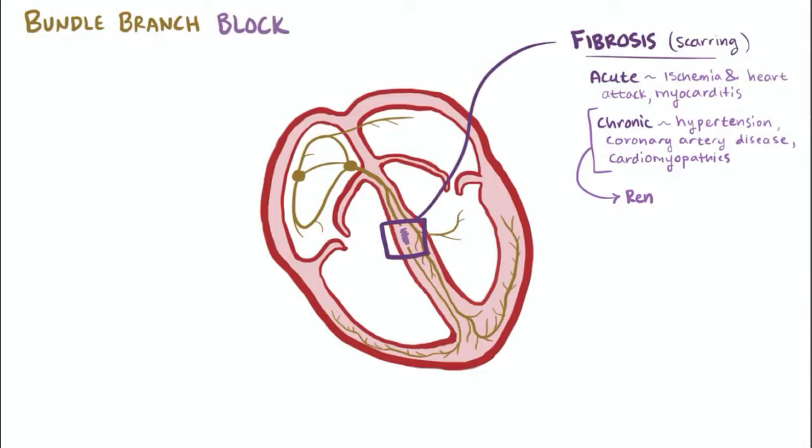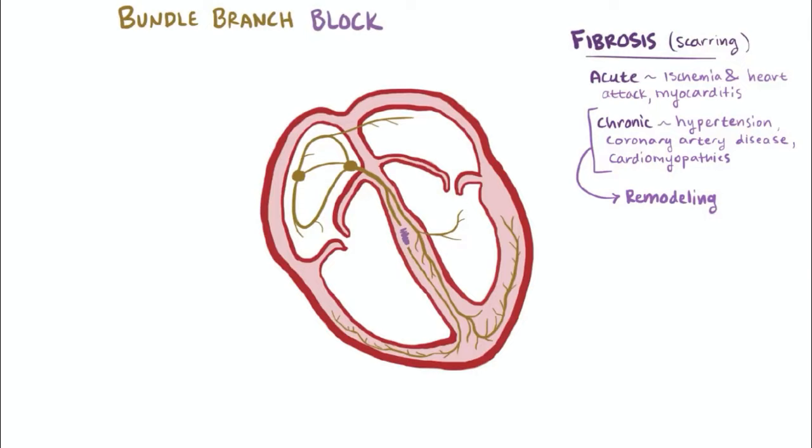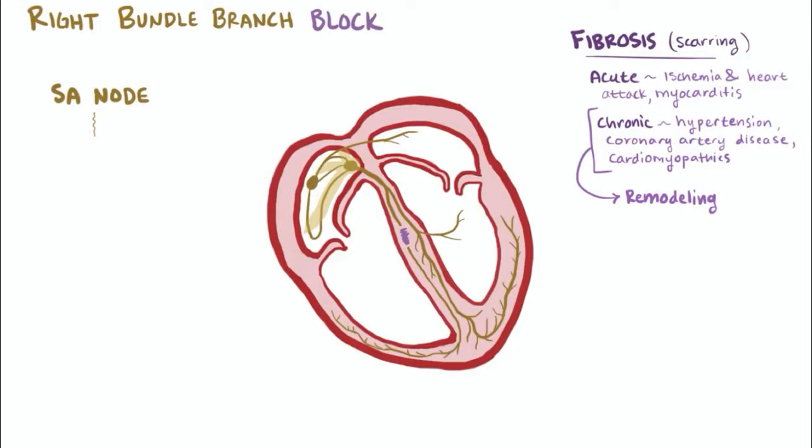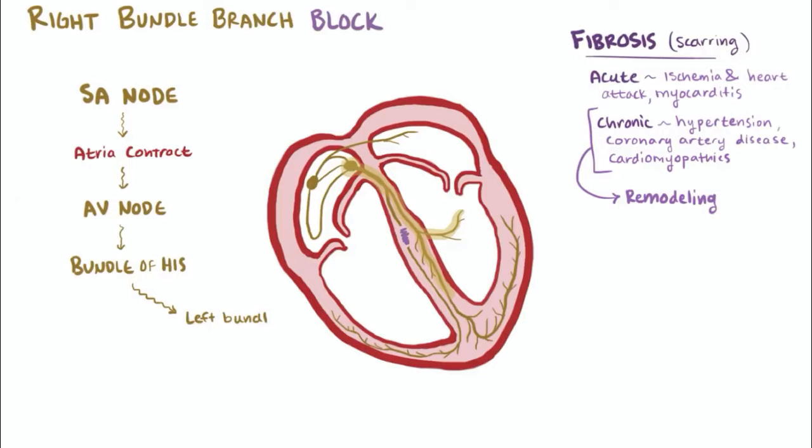So if the block happens on the right side, it's referred to as a right bundle branch block. With this type, the electrical signal starts in the SA node, contracts the atria, moves through the AV node, splits at the bundle of His, and then moves down the left bundle branch, but is blocked on the right bundle branch.